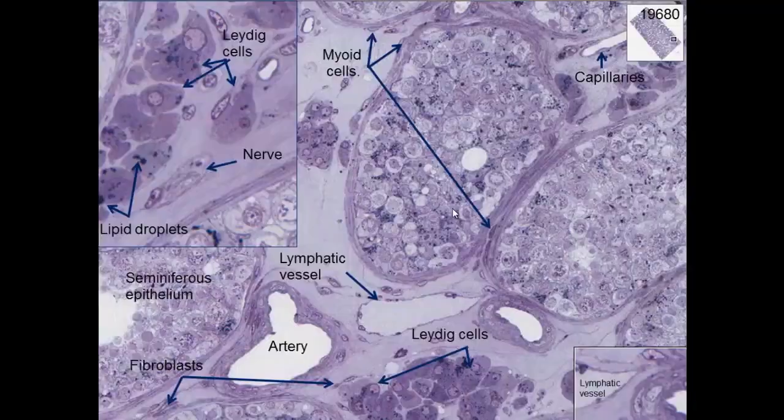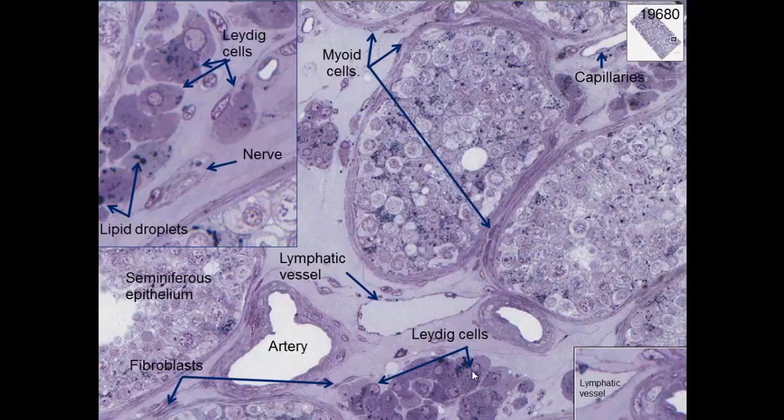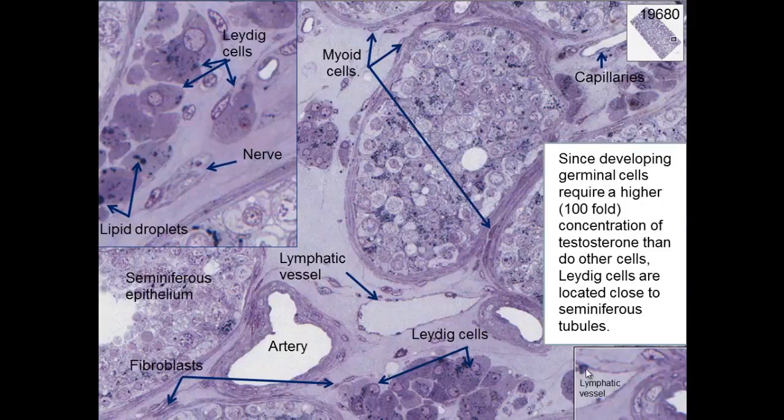So here we can see the myoid cells around the seminiferous tubules. We see Leydig cells, lymphatics, very thin wall. We see capillaries, blood capillaries, Leydig cells. You can see some lipid in Leydig cells here, and we can see more Leydig cells, seminiferous tubules, lymphatics inside there.